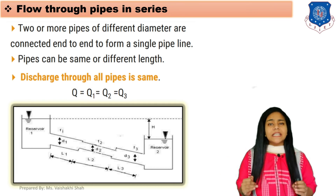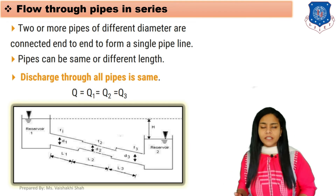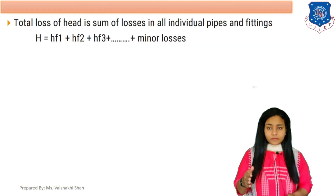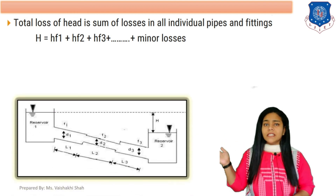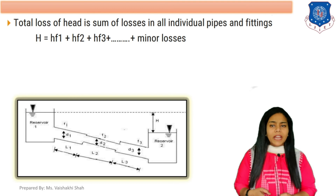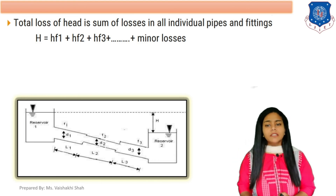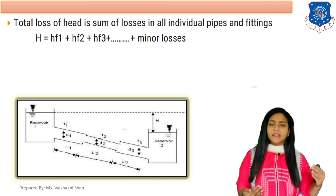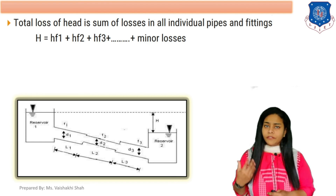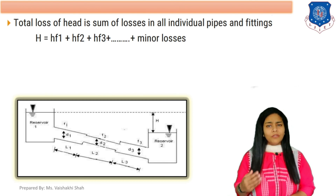When pipes are connected in series, discharge through all the pipes is the same. So Q = Q1 = Q2 = Q3, because discharge from all three pipes is equal. To find the total head loss for pipes in series, it equals the total of all head losses — exit, entry, individual pipe friction, fittings, major and minor energy losses. So H = hf1 + hf2 + hf3 plus minor losses.